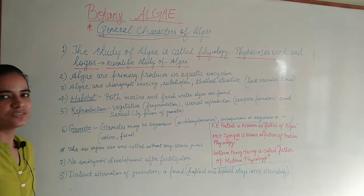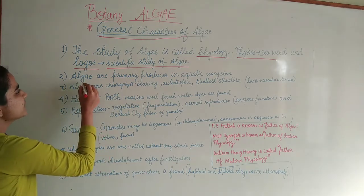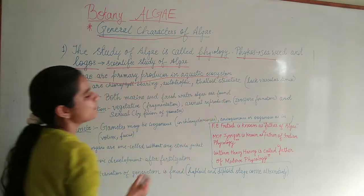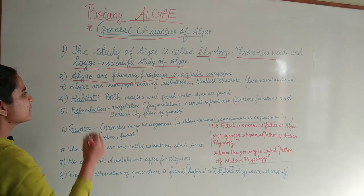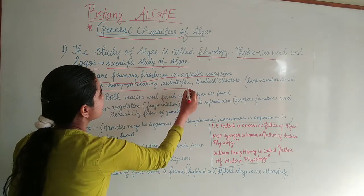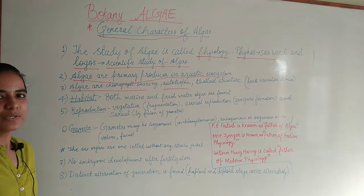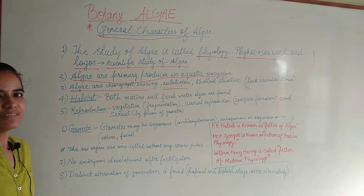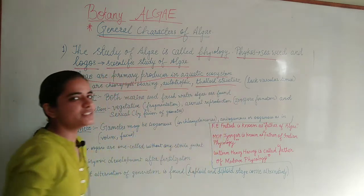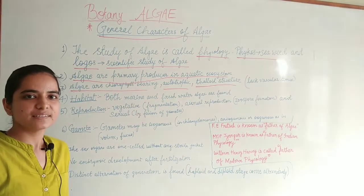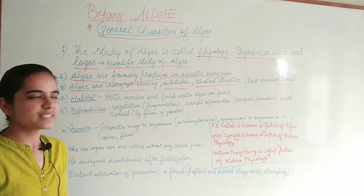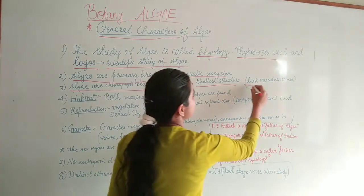The study of algae is known as phycology. Algae are primary producers in aquatic ecosystems. Algae are chlorophyll-bearing autotrophic organisms — they photosynthesize and are autotrophs. They are thalloid structures, meaning their body is not differentiated into stem, roots, and leaves, and they also lack vascular tissues.